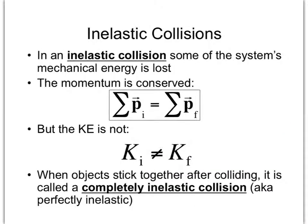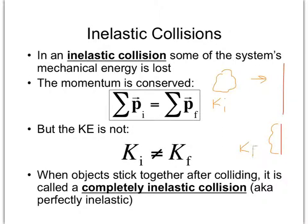To define inelastic collisions: some mechanical energy is lost. Say you have a wad of clay moving with some velocity and kinetic energy, and you throw it at a brick wall. It's moving initially and has kinetic energy — one half mv squared — but after hitting the wall it's at rest, so kinetic energy final is zero.